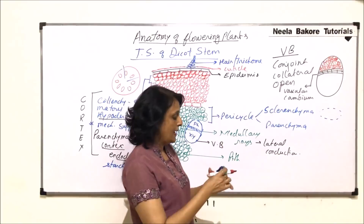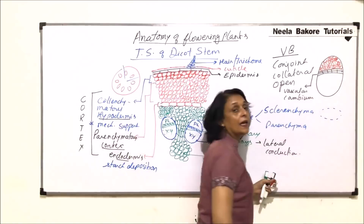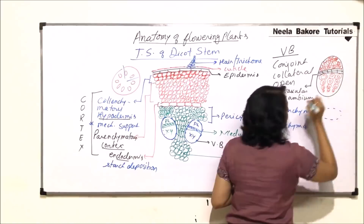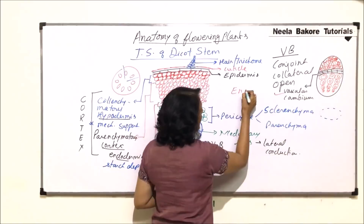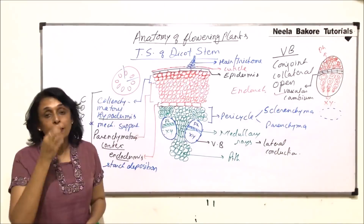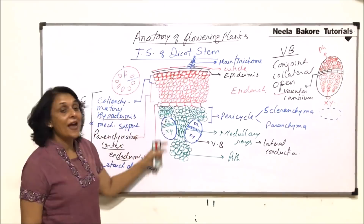Cambium is the meristematic part. Coming to the xylem: xylem is endarch, so outer is metaxylem, which is bigger, and as we move towards the inner side — towards the pith — the xylem becomes smaller, that is protoxylem. So the vascular bundles are open, conjoint, and collateral with endarch xylem.